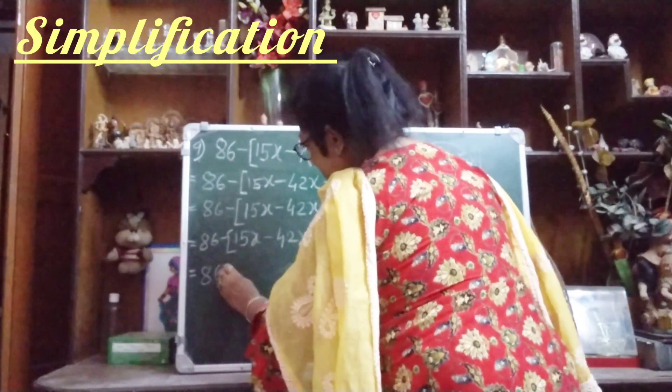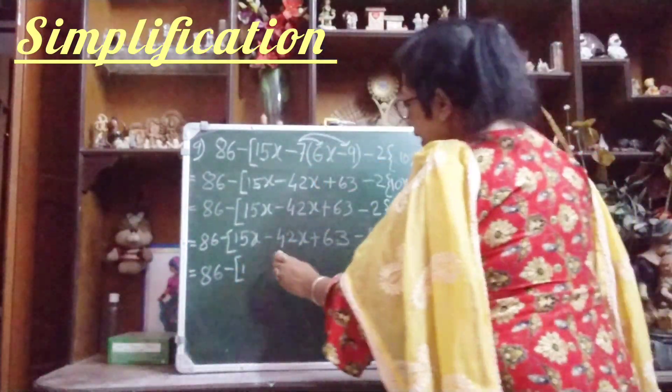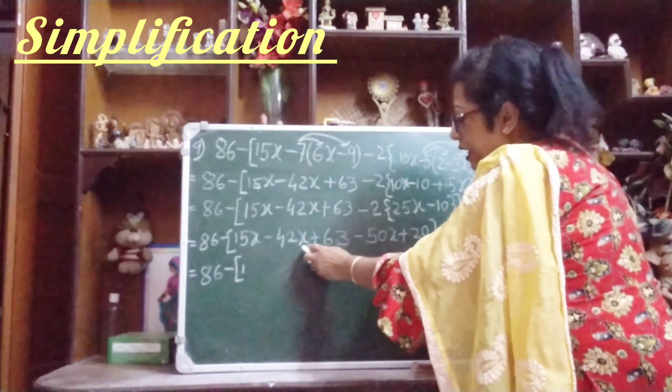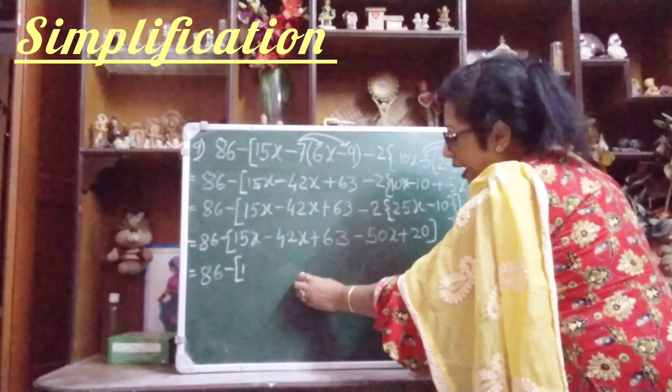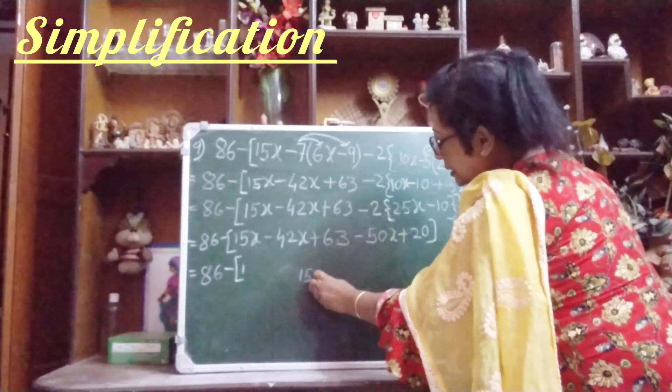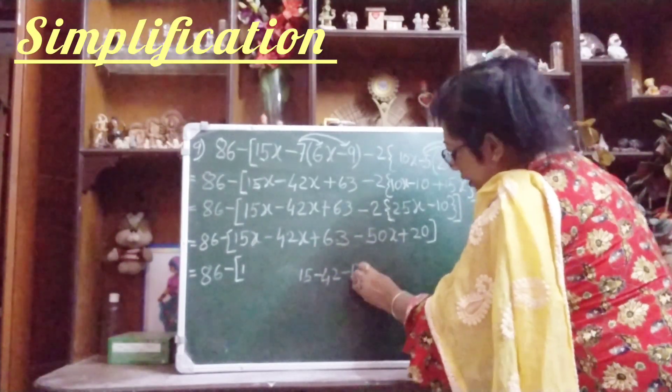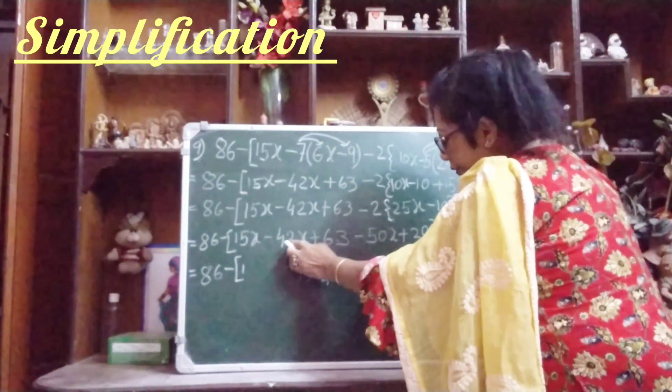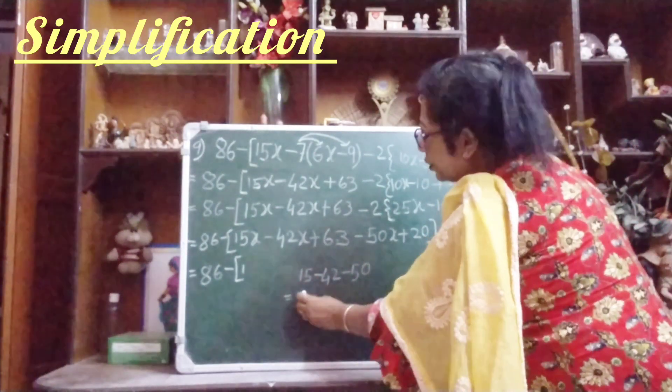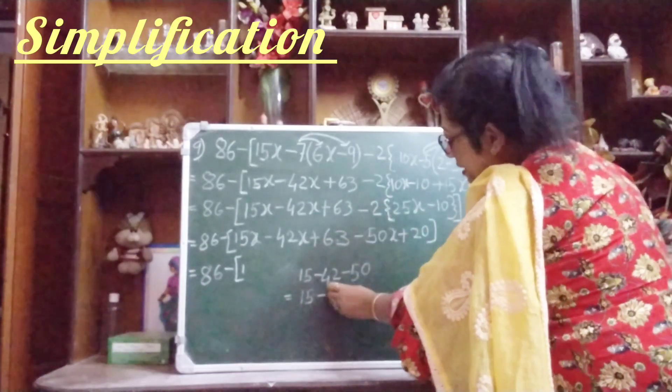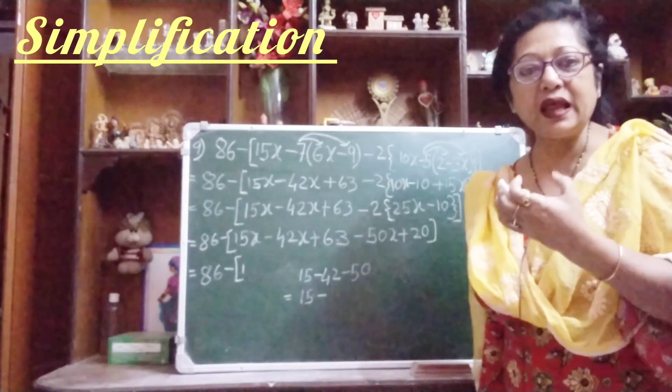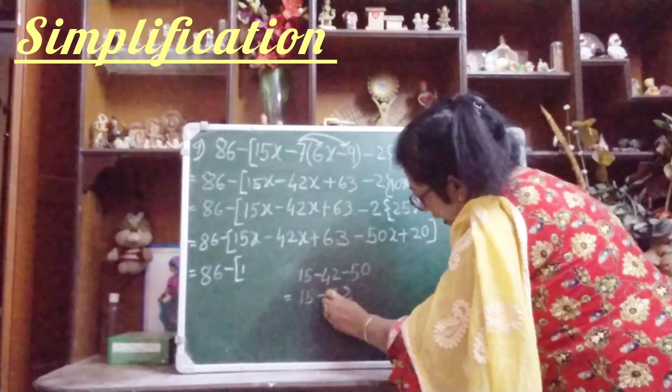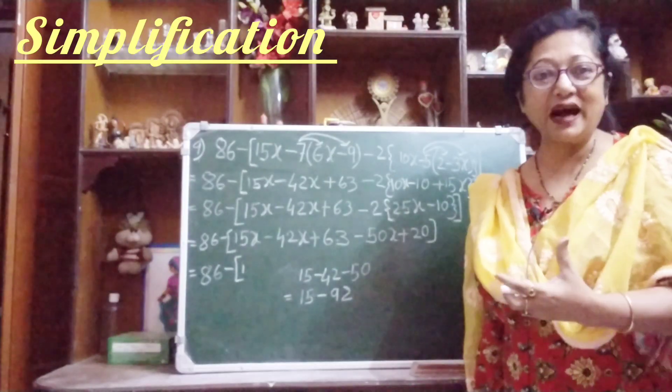Next step, 86 minus third bracket. Now here you see these variable terms, means terms with x, that is called variable terms. How many are they? 15x minus 42x minus 50x. You write in rough this way: 15 minus 42 minus 50. These two terms you will add, 42 plus 50 is 92, and you will put minus sign. So 92 minus 15, first you put the minus sign because 92 is the bigger number, and left side of the bigger number is minus. You do the subtraction, that is 77. We got minus 77x.